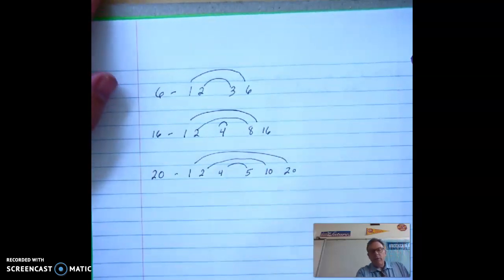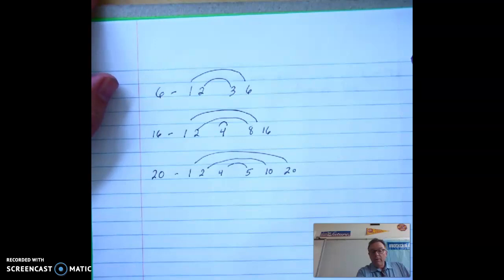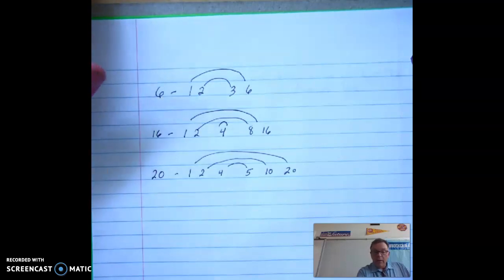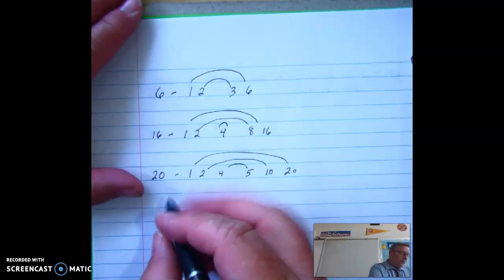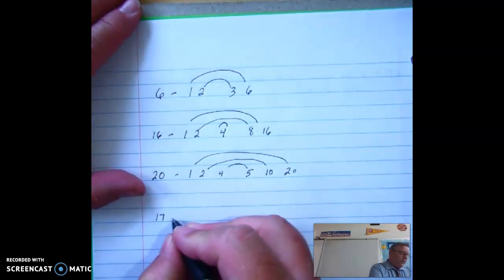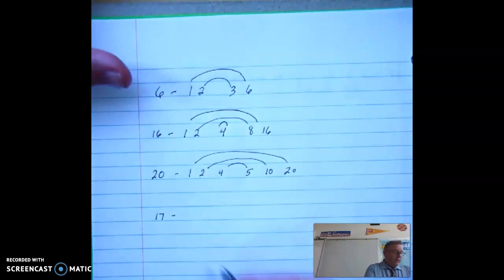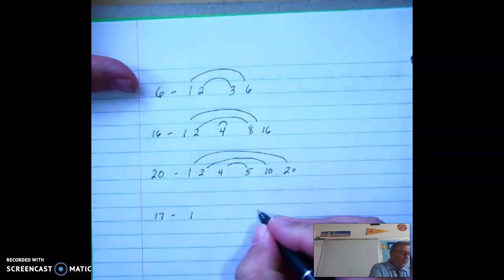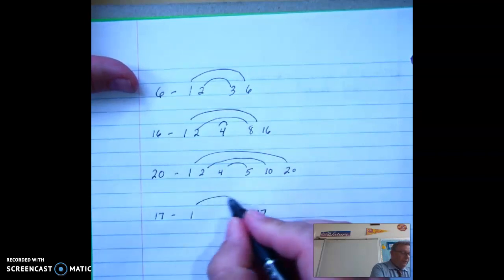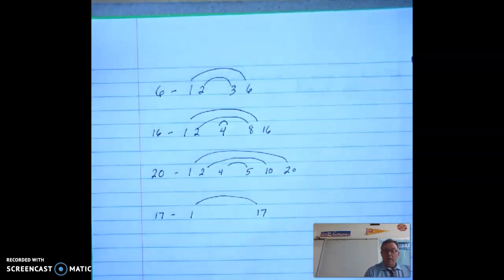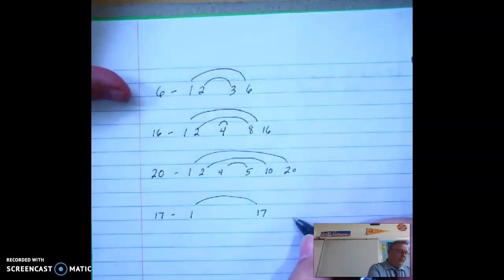So your factors of 20 are one, two, four, five, ten, and 20. One more. Let's do 17. So your factors of 17 are one and 17. Nothing else because it's prime.